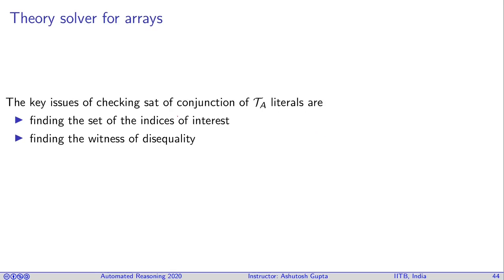The key issues of checking SAT of a conjunction of theory of array literals are finding the set of indices of interest, where which index the arrays are being read and written, and finding the witness of disequality. If there is a point when you read something and you're expecting some other value, then you have a contradiction.